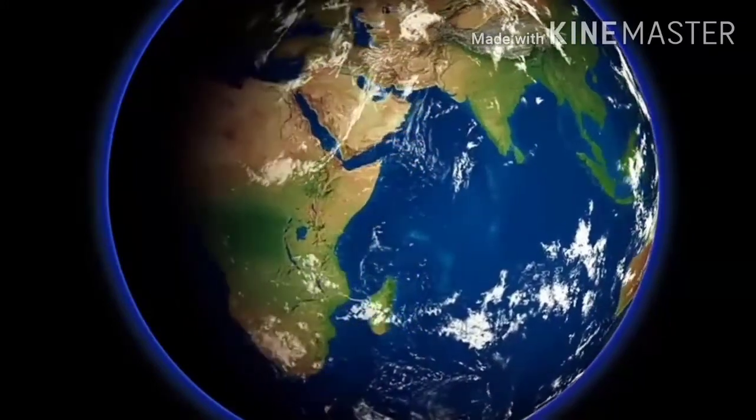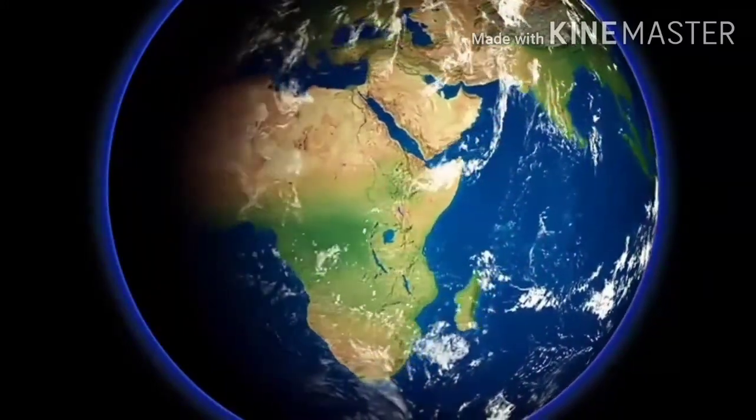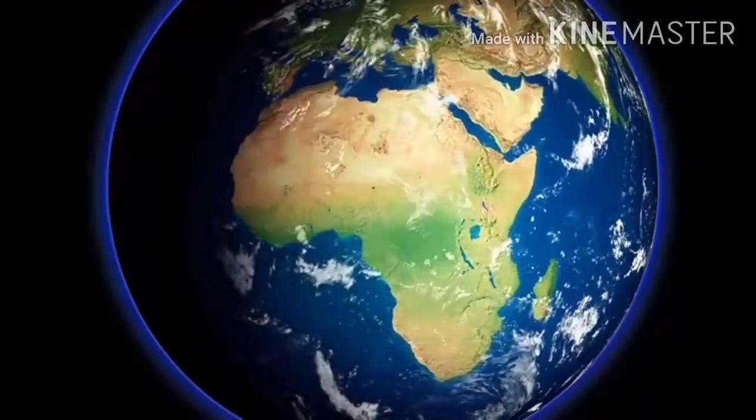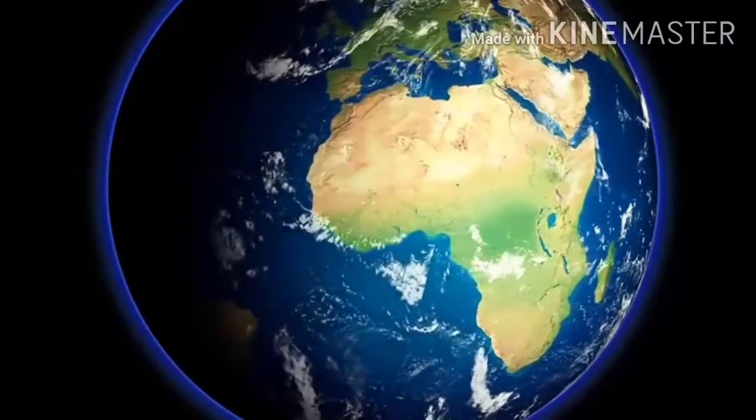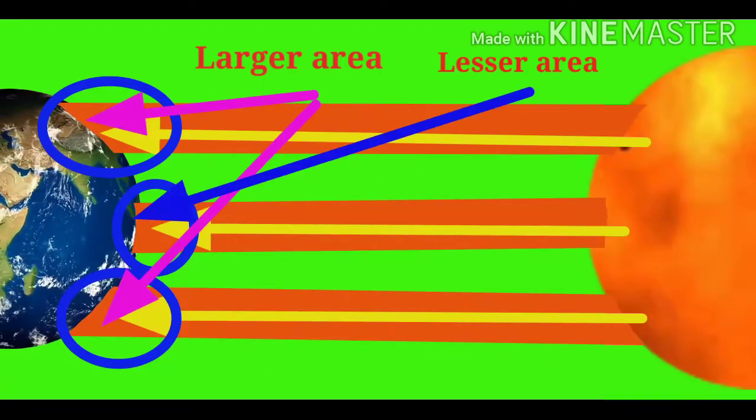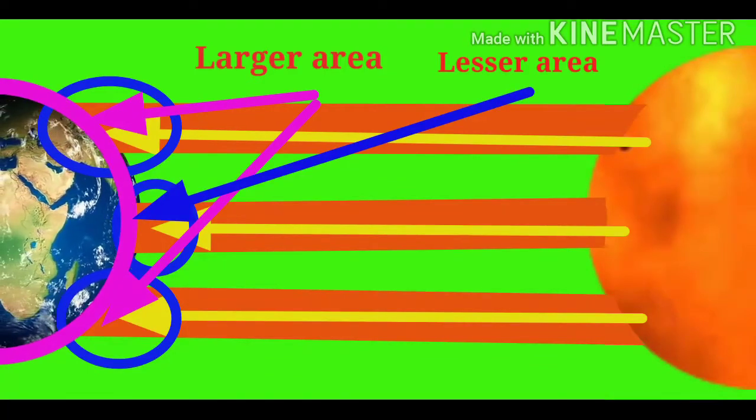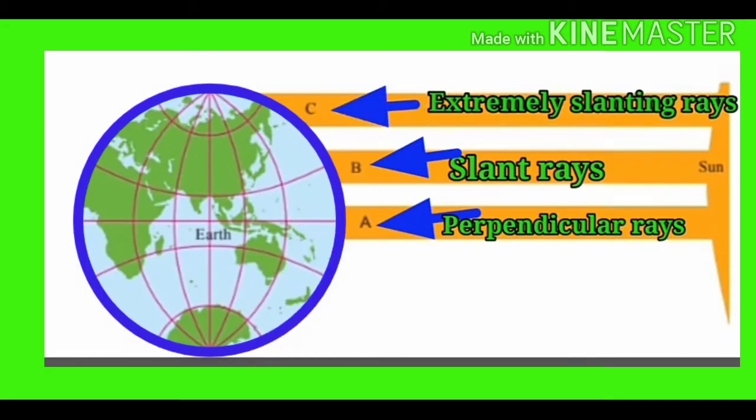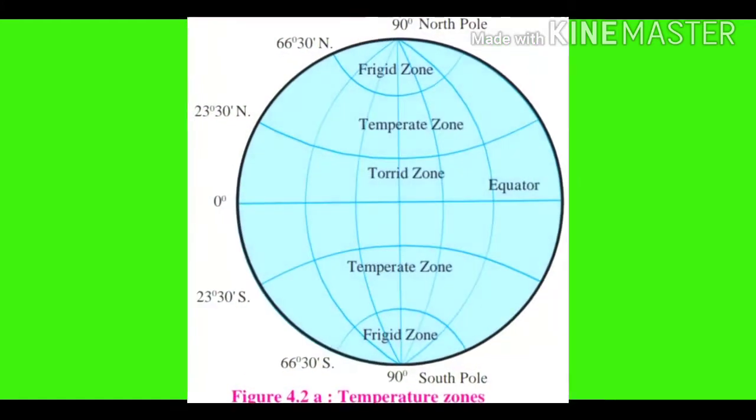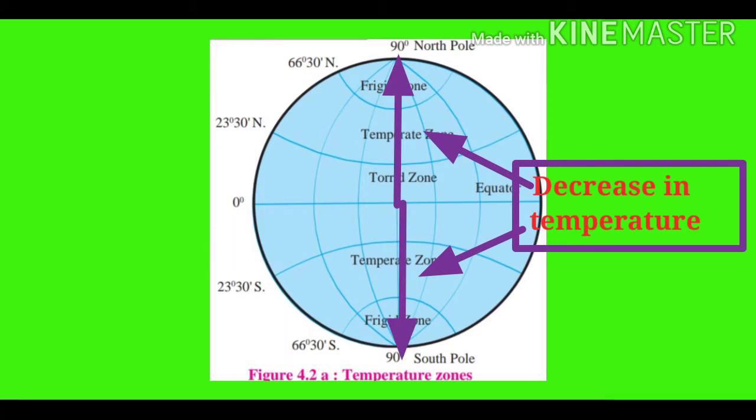Welcome back students in lesson number 5, temperature part 2. Before we proceed to the second part, let's have a look at what we learned in the previous video. Sun rays falling on the earth are straight and parallel to each other. However, due to the spherical shape of the earth and the resultant curvature of the surface, they occupy a larger or lesser area. This leads to unequal distribution of the heat received from the sun, resulting in decreasing temperature from the equator to the north and south poles.